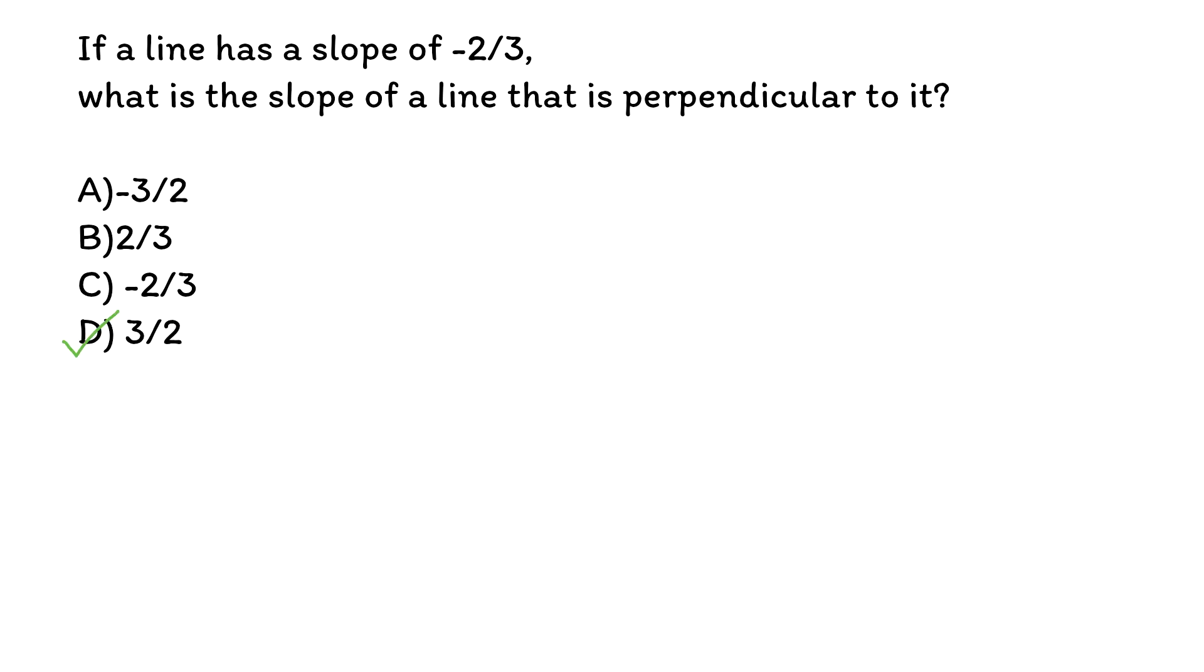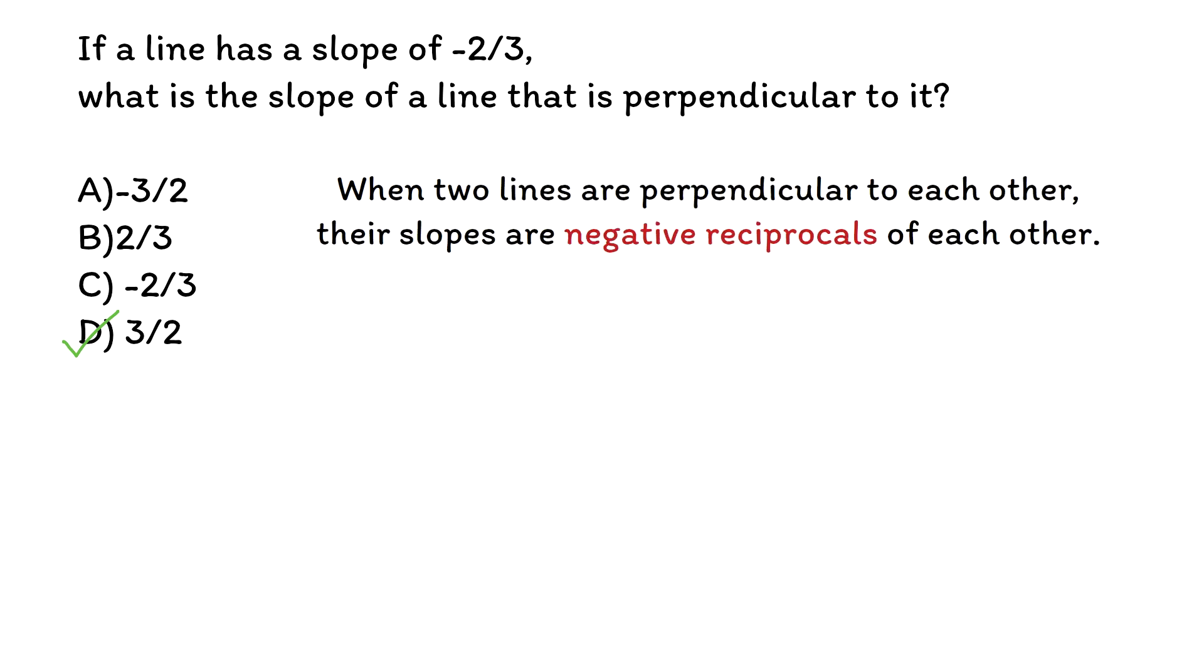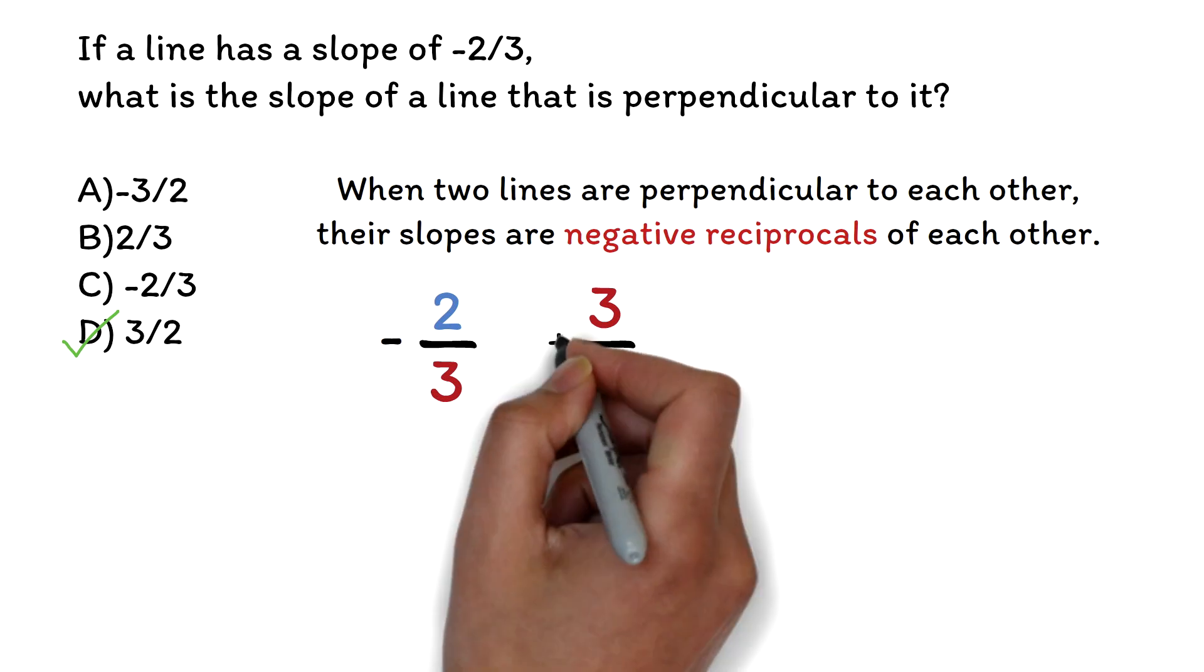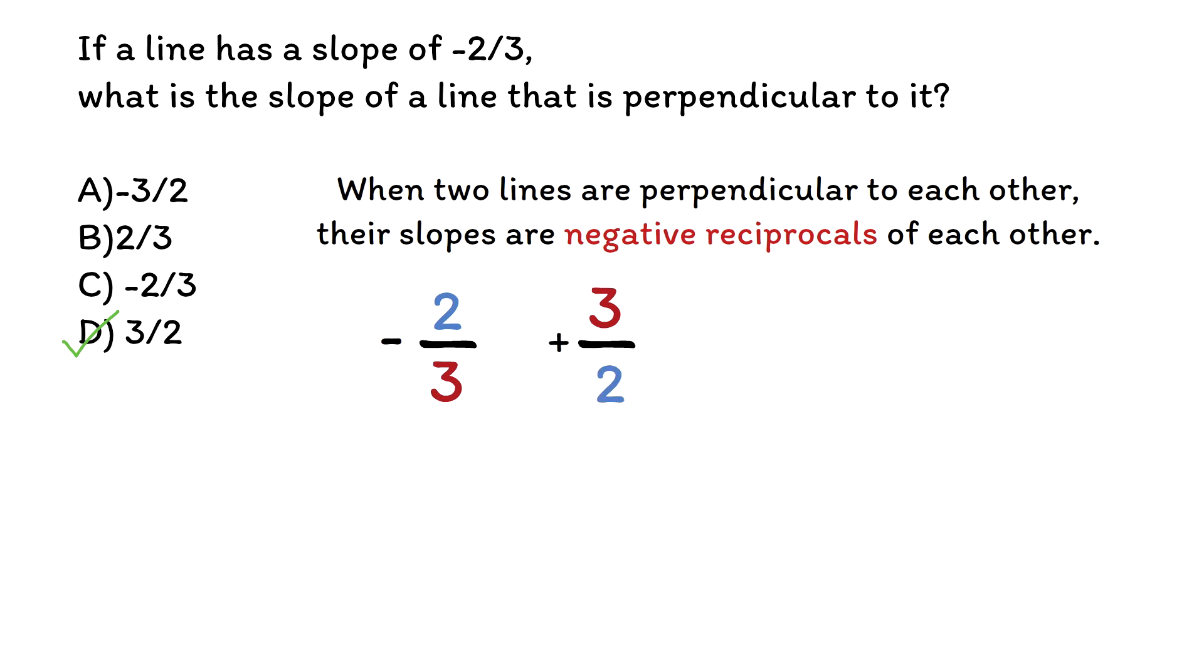When two lines are perpendicular to each other, their slopes are negative reciprocals of each other. Reciprocal here simply means flipping the numerator and denominator of the number. So 2 over 3 will be 3 over 2. The negative will simply change the sign. So since this is negative 2 over 3, we will have positive 3 over 2. We basically flipped the numbers and changed the sign. There's no need to write plus in front of a number, so the answer is D, 3 over 2.